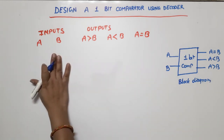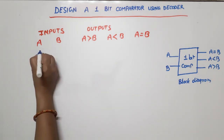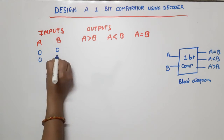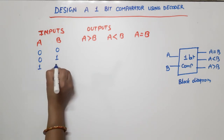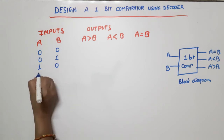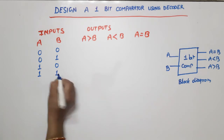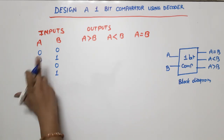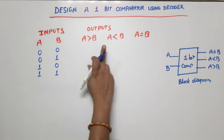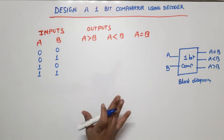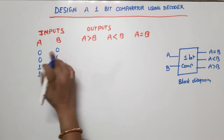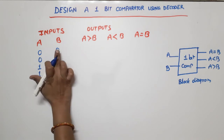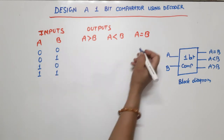Now, if we have two one-bit inputs, the combinations are: A=0 B=0, A=0 B=1, A=1 B=0, and A=1 B=1. When both inputs are zero (0,0), A is equal to B, so that output is 1 and the remaining two outputs are 0.